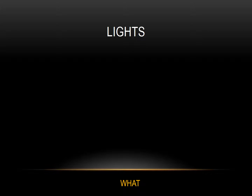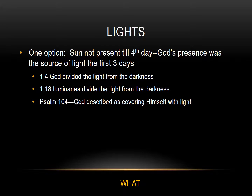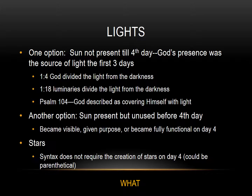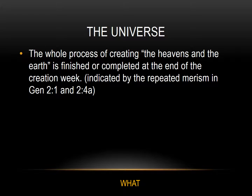A question arises when we notice that God says 'let there be light' on day 1, but the sun is not mentioned until day 4. One explanation says God's presence was the source of light for the first three days, supported by comparing verse 4 — where God divided the light from the darkness — with verse 18, where the luminaries divide the light from the darkness, and by Psalm 104, where God is described as covering himself with light as with a garment. Another explanation suggests the sun was present before but only became visible, was given purpose, or became fully functional on day 4. The Hebrew syntax does not require the creation of the stars on day 4, and 'he made the stars also' could be considered parenthetical. The whole process of creating the heavens and the earth is completed at the end of the creation week.